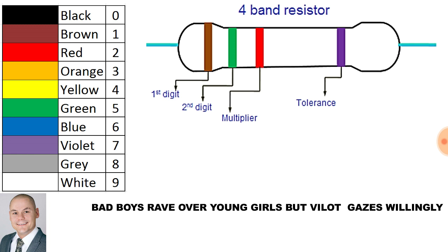Now to help myself remember the sequence of these colors, I use a memory term and it goes as follows: Bad boys rave over young girls but violet gazes willingly.